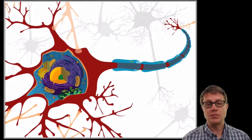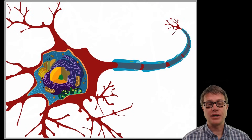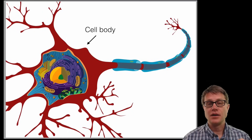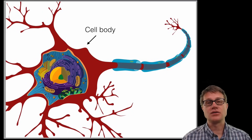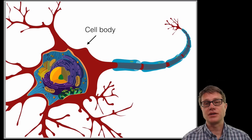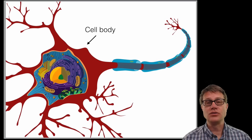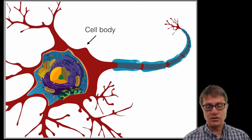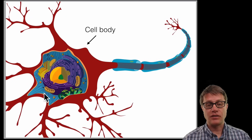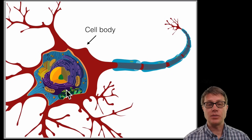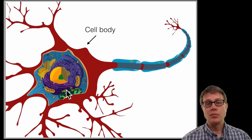If we look at the neuron anatomy and remove all the other neurons, the center is going to be what is called the cell body. This is a typical cell. It is a metabolizing cell — it is taking in energy and using that energy. And so it is going to have a nucleus, Golgi apparatus, and mitochondria. It is a typical cell.